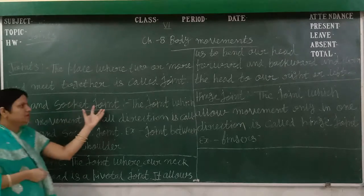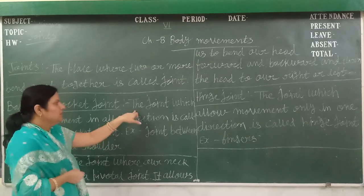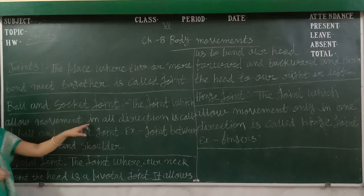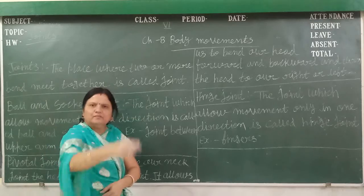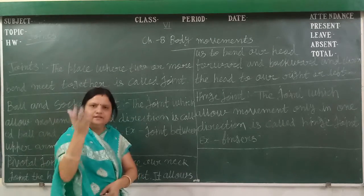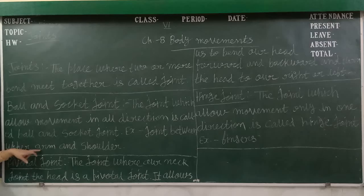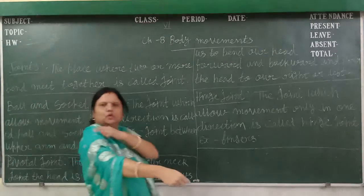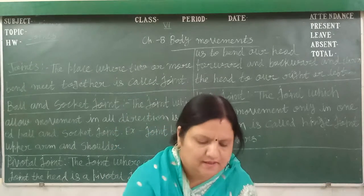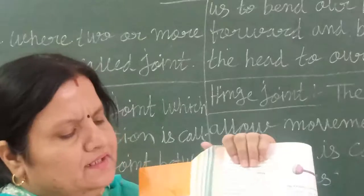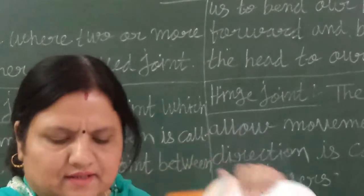First, ball and socket joint. The joint which allows movement in all directions. When our body is moving in all directions — just like I am moving my head and it is moving in all directions — this joint is known as ball and socket joint. Example: the joint between the upper arm and shoulder. We can see the ball and socket joint in this figure, and it helps to move our body in all directions.